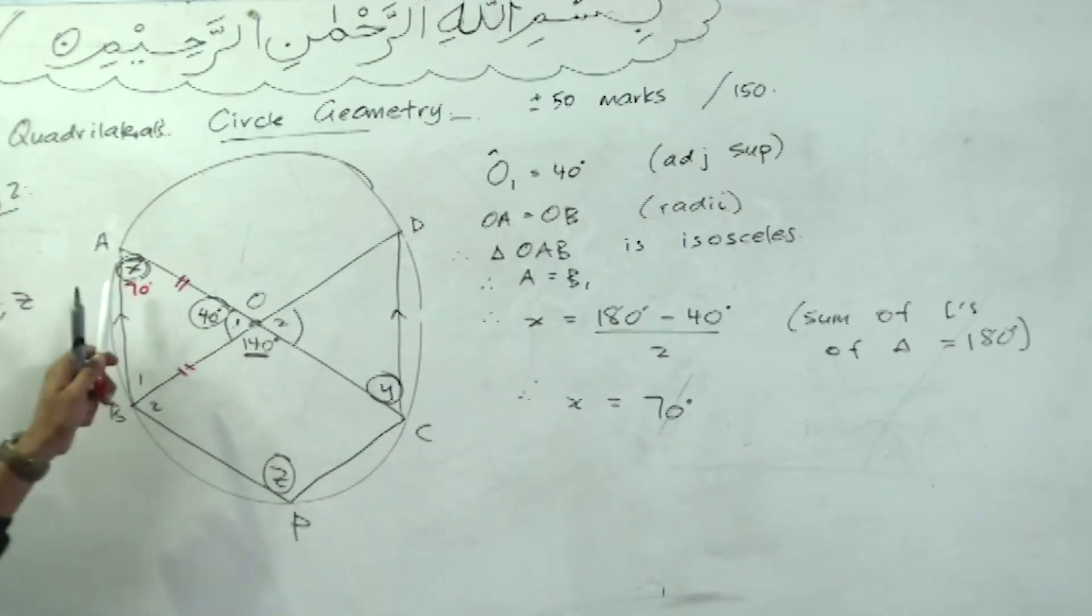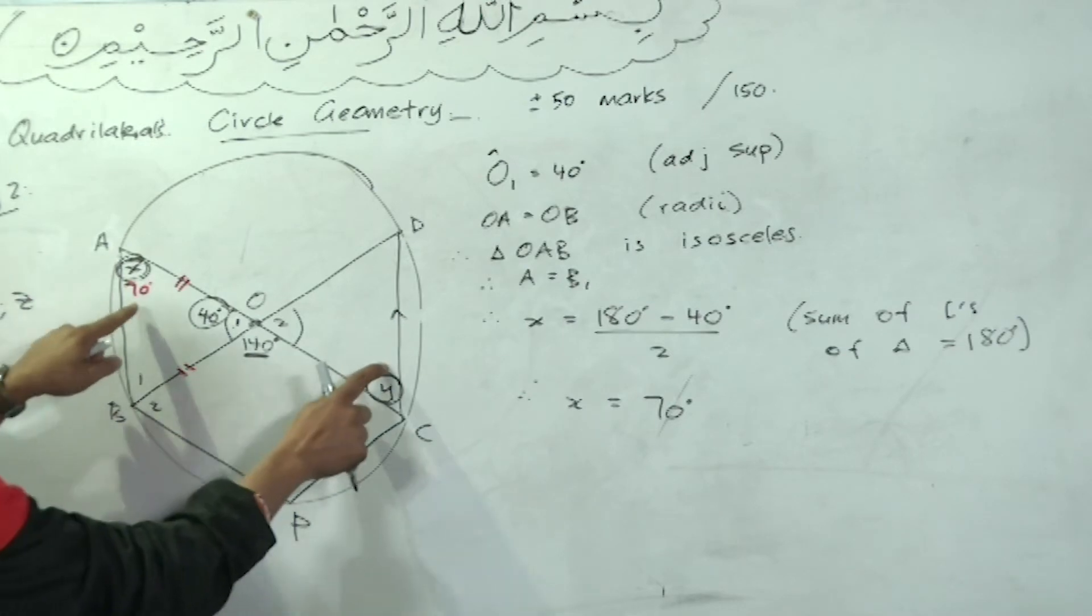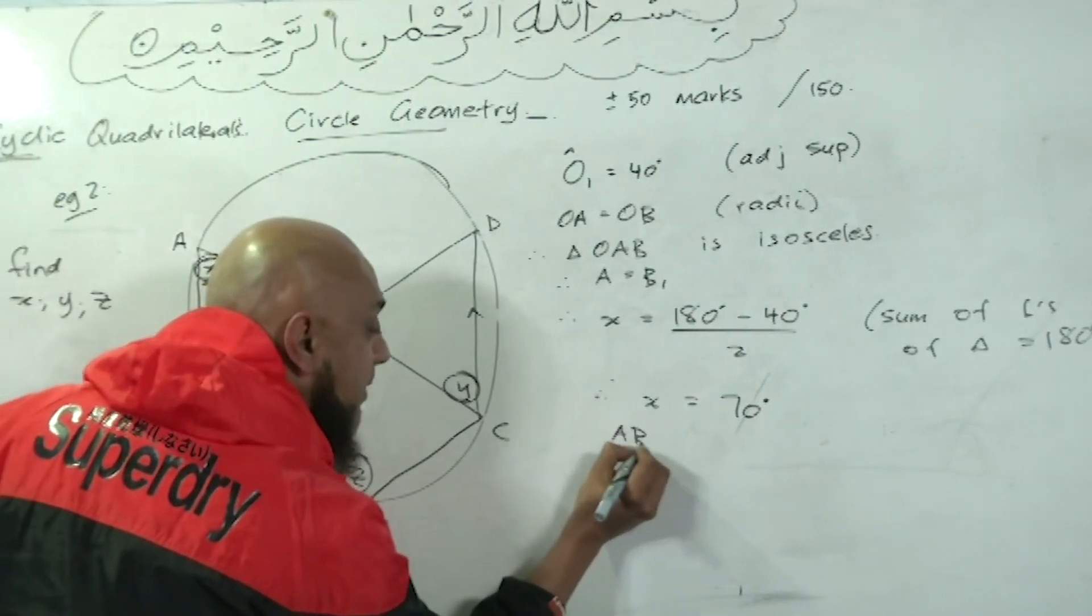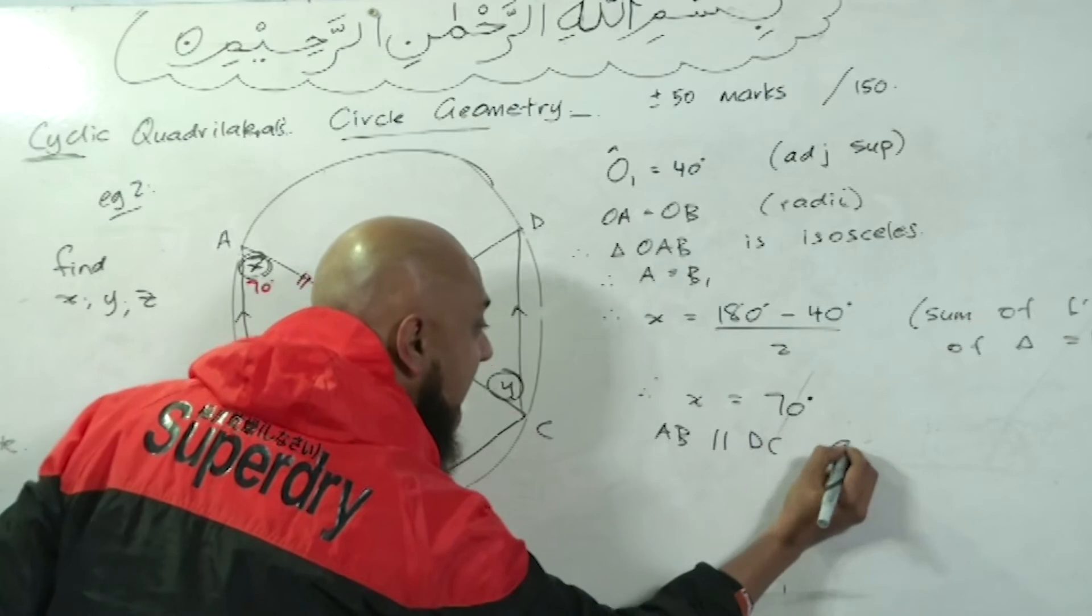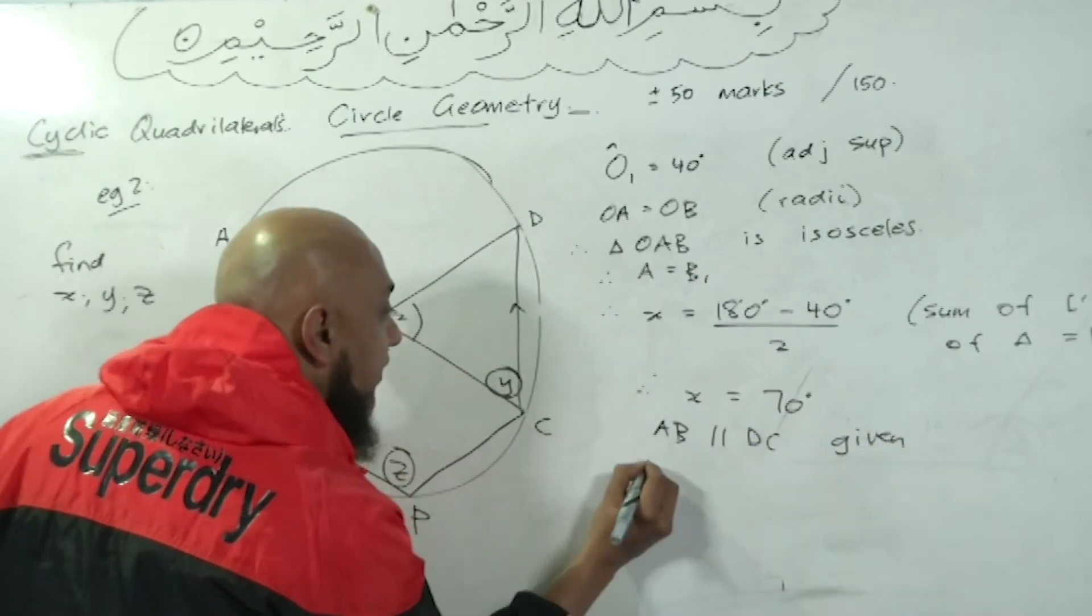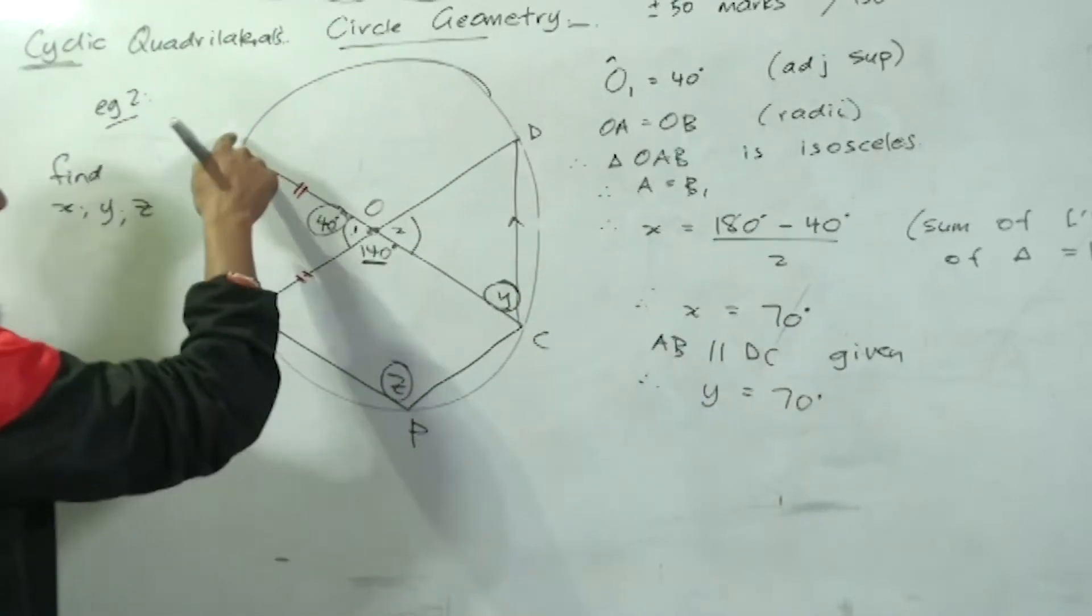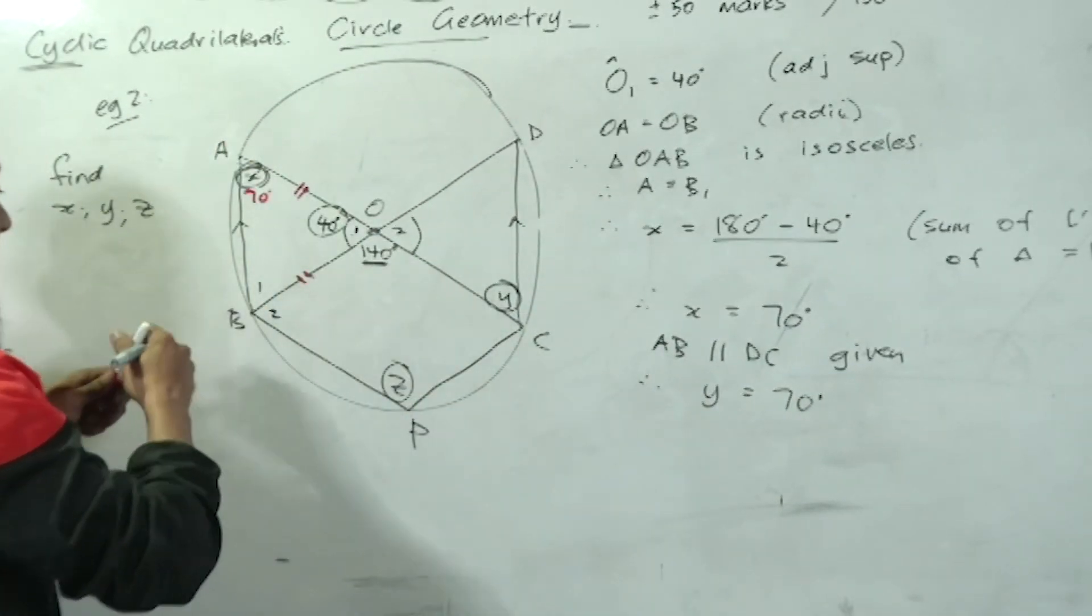Like I said, the minute you get an answer here, you put it directly onto your diagram. Now we've got alternate angles, guys. These are parallel lines. AB is parallel to DC. AB is parallel to DC—it was given to you.